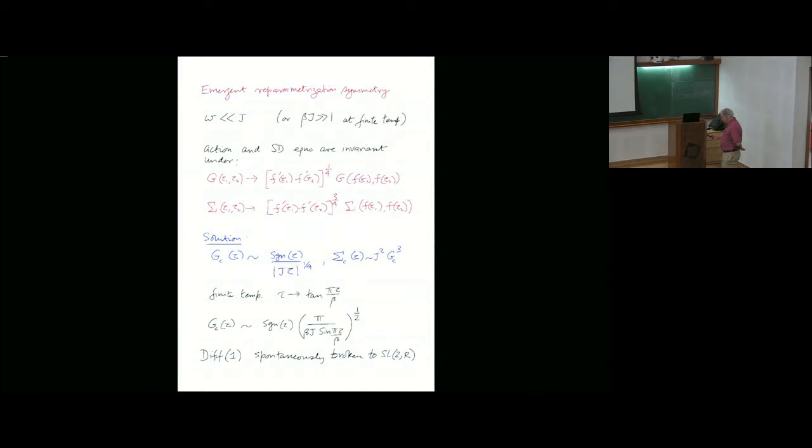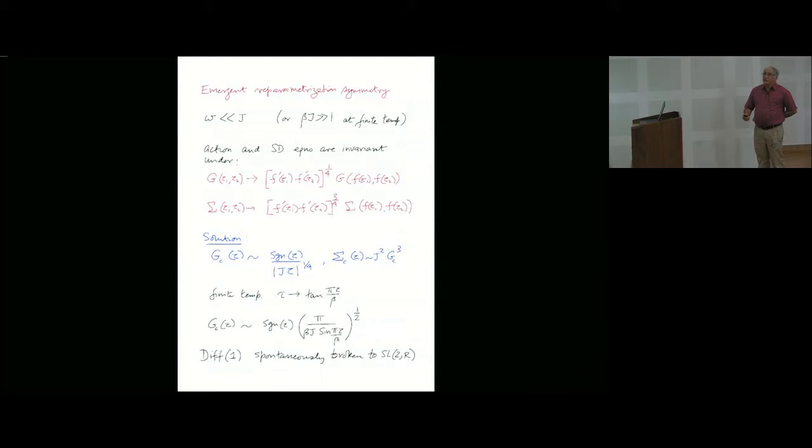This is the key observation of JIF, that if the frequency involved is much less than this coupling J, or at finite temperature beta J is much greater than 1, then the action and the Schwinger-Dyson equations are invariant under this particular symmetry involving a function of tau. This is the emergent reparametrization symmetry.